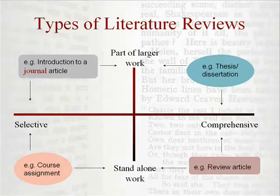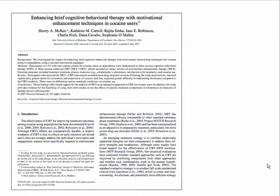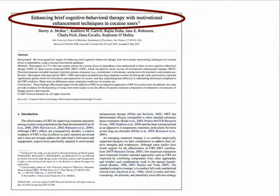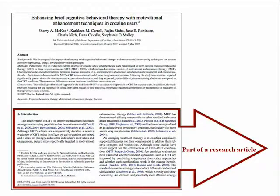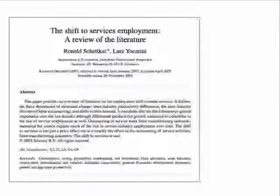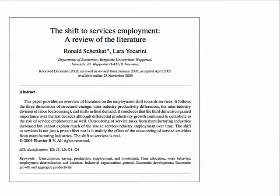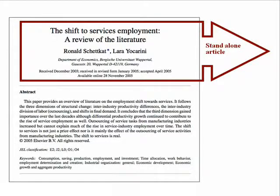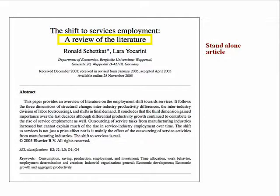Most research articles begin with a selective literature review to establish context, often as part of the introduction. Here is an article about cognitive behavioral therapy — this is the literature review, and in this article it is part of the introduction. You can tell it includes a literature review because it discusses important research already published on this topic. Here is an example of a standalone literature review article about employment — the article's title states that this is a review of the literature. However, not all review articles will have the term 'literature review' in their title. In-depth review articles like this are an excellent starting place for research on a topic.